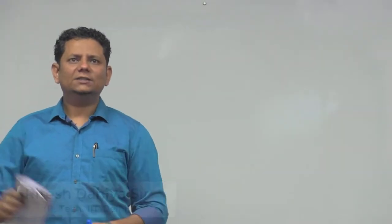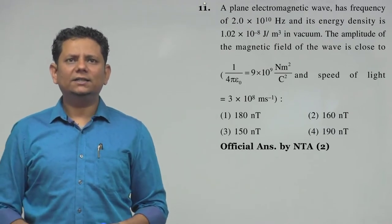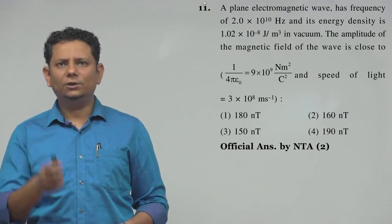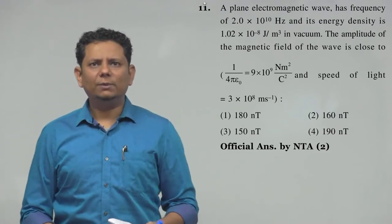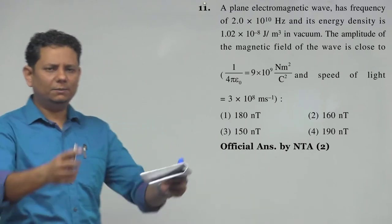Next question. A plane electromagnetic wave has frequency of 2 into 10 to the power 10 hertz and its energy density is 1.02 into 10 to the power minus 8 joule per meter cube in vacuum. The amplitude of magnetic field of the wave is close to, and there are 4 options. Let me tell you,